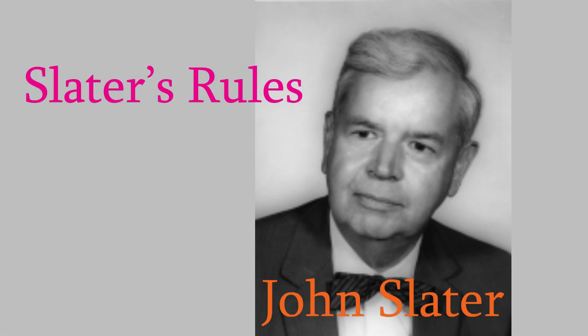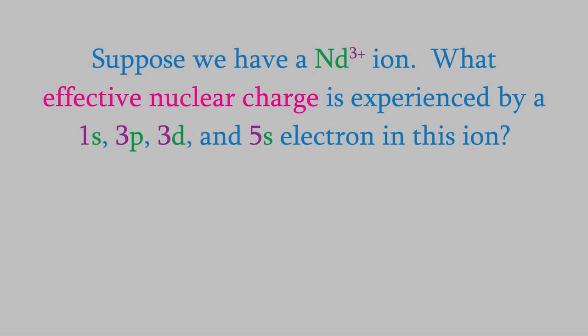Let's look at how they work. Suppose we had a neodymium plus 3 ion. Let's say we want to know the effective nuclear charges felt by 4 different electrons in that ion: a 1s electron, a 3p electron, a 3d electron, and a 5s electron. We'll use Slater's rules to figure out the effective nuclear charges, which have the symbol z star.